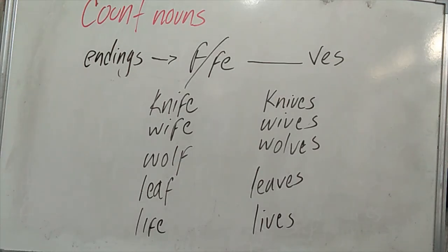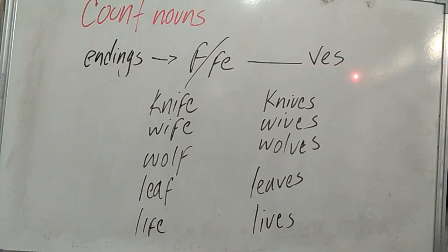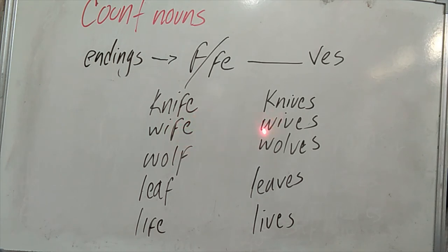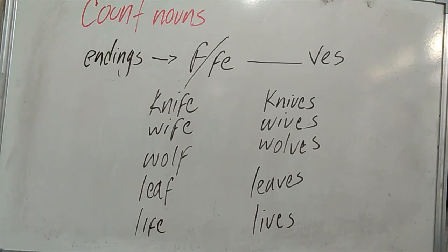Now we have two more endings: -F or -FE. We eliminate them and write -VES. For example: knife → knives, wife → wives, wolf → wolves, leaf → leaves, life → lives. The meanings: knife = cuchillo, knives = cuchillos; wife = esposa, wives = esposas; wolf = lobo, wolves = lobos; leaf = hoja, leaves = hojas; life = vida, lives = vidas.